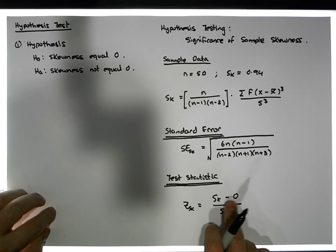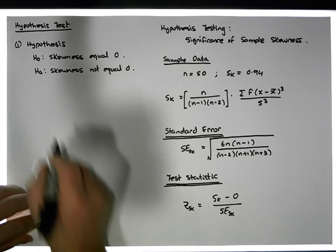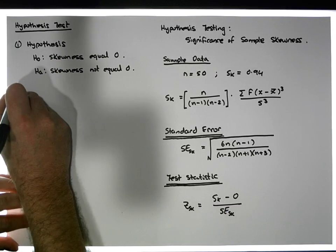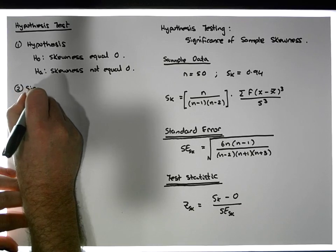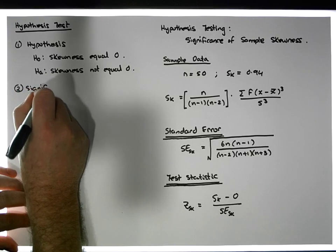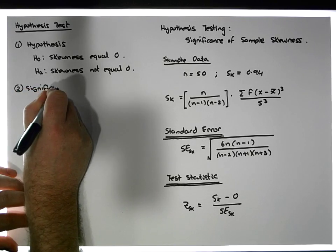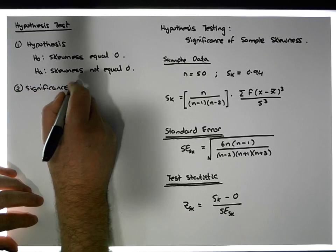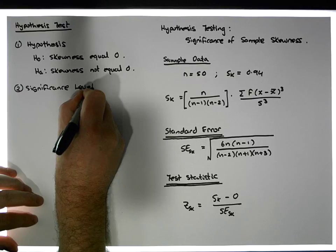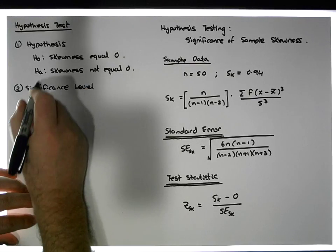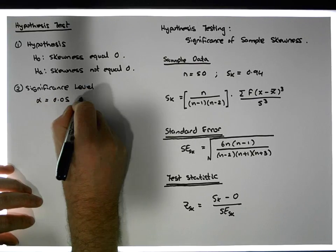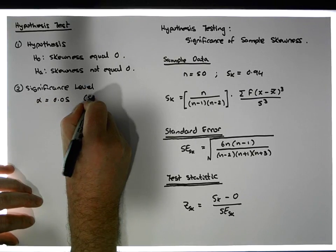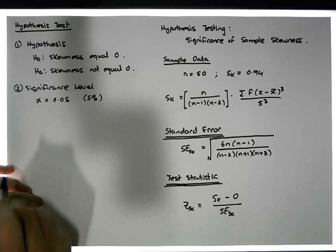Step two is the significance level — that's the probability of incorrectly rejecting the null hypothesis. We're going to set alpha equal to 0.05, so this is at the five percent level.